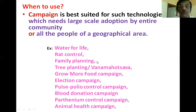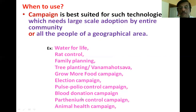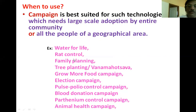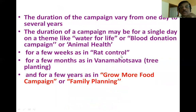Family planning is another example — if one or two people adopt family planning, you cannot control the population. Family planning needs adoption by all families in the country. Other topics include tree planting campaigns, grow more food campaign, election campaign, pest control campaign, blood donation campaign, parthenium control, and animal health campaign. These are problems that need adoption of practices by the entire community to be solved effectively.